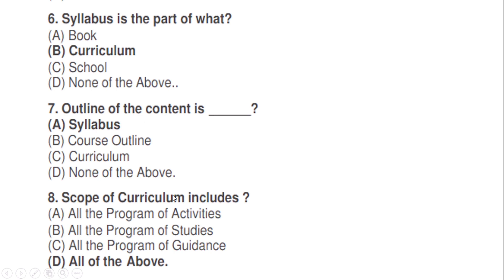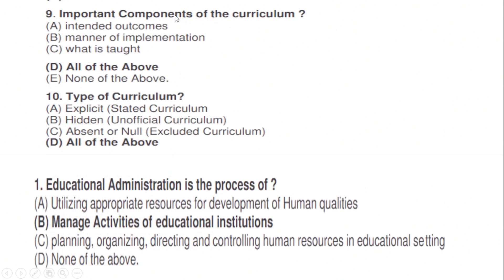Scope of curriculum includes: correct option D — all of the above, meaning A, B, and C, including all programs of guidance. Important components of the curriculum: correct option D — all of the above, meaning (a) intended outcomes, (b) manner of implementation, and (c) what is taught.